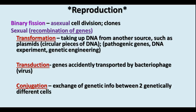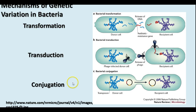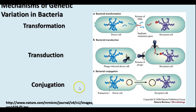When the bacteriophage infects another bacterial cell, those bacterial genes can be transferred as well in the process of transduction. Finally, conjugation is when you have the exchange of genetic information between two genetically different cells by transferring a plasmid from one to the other. This diagram shows all three: transformation, transduction, and conjugation.